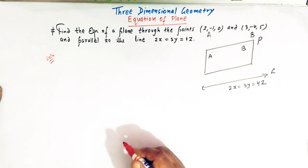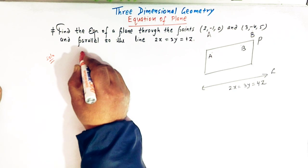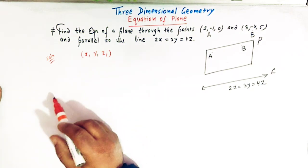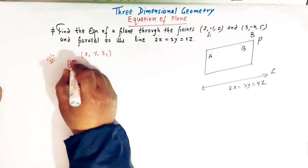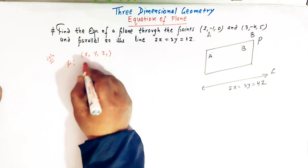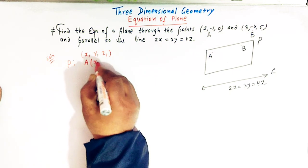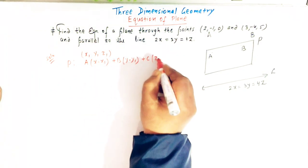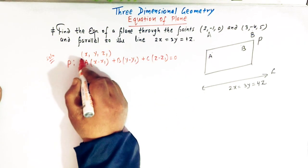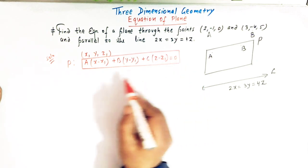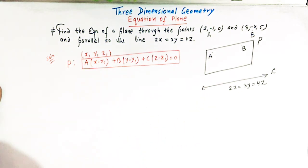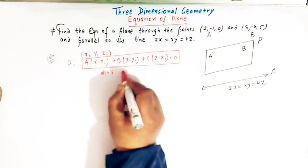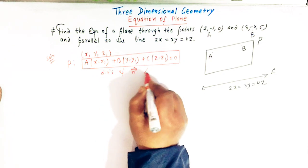We know that any plane which passes through a point (x1, y1, z1) has the equation A(x - x1) + B(y - y1) + C(z - z1) = 0. This is the equation of the plane passing through point (x1, y1, z1), where A, B, C are the direction ratios of the normal vector to this plane.